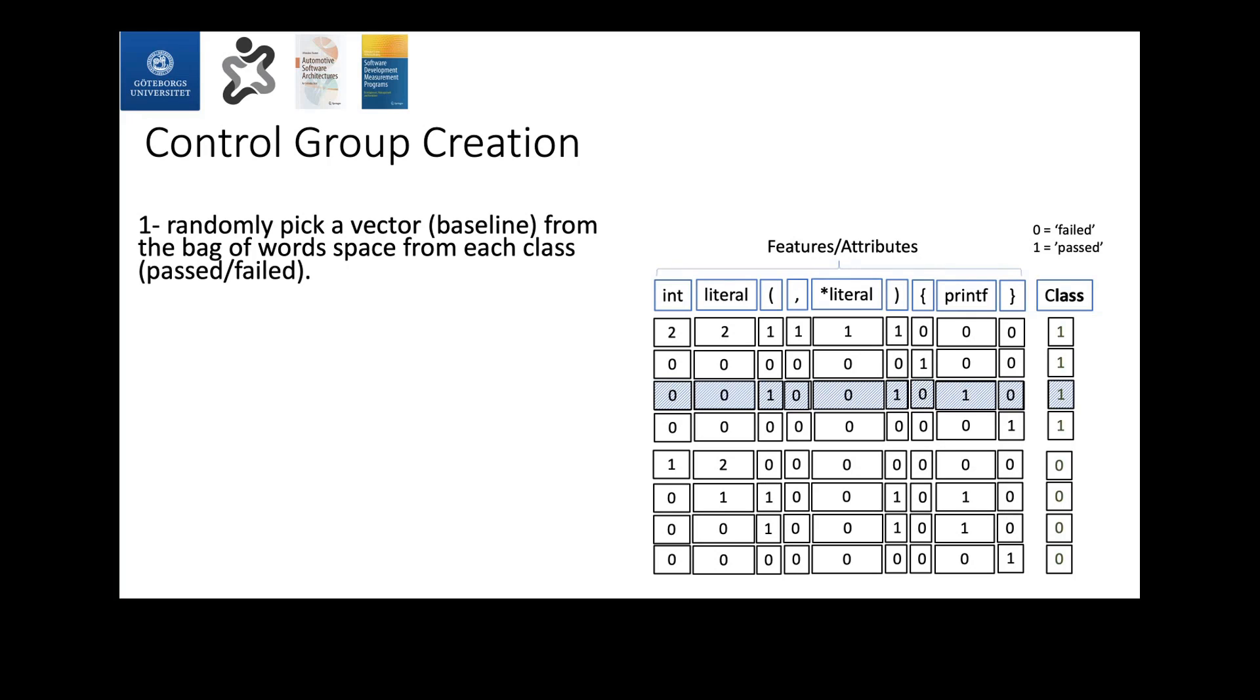The first step was we needed to construct this control group. This control group needs to come with zero percent class noise level so that we can seed variation of class noise and examine their effect on the performance. I'm going to explain the algorithm that we followed for that. What we did was we randomly picked two line vectors from each of the binary classes in the generated feature space from the bag-of-words approach. That was the first step.